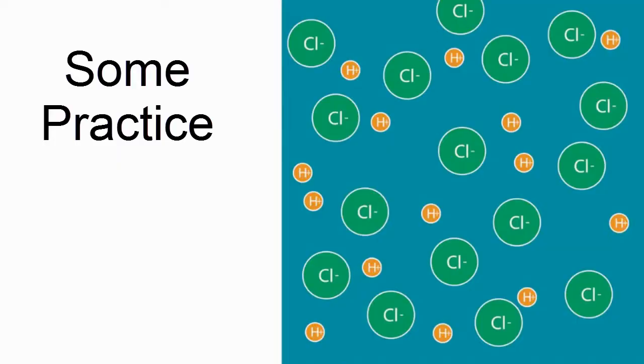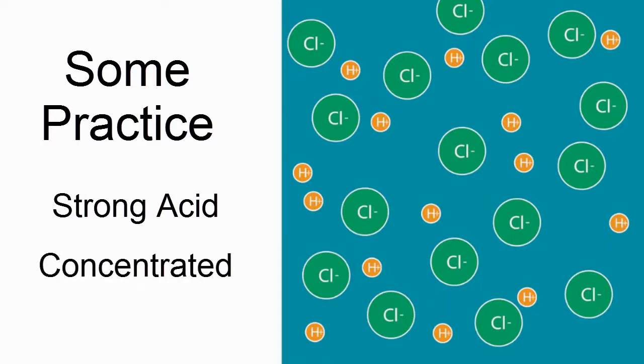Now try this one. You can see there are quite a bit of the Cl's and the H pluses, and that the H pluses are all dissociated. So we can tell that this is going to be a strong acid. It's also going to be considered concentrated because there's quite a bit of it.